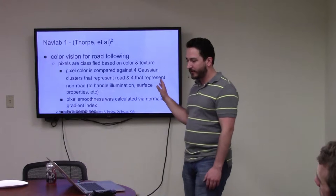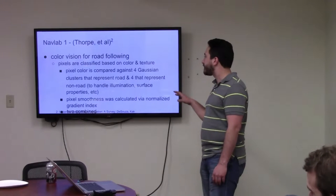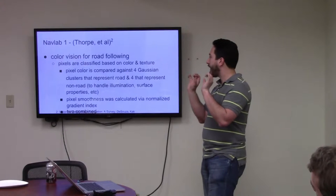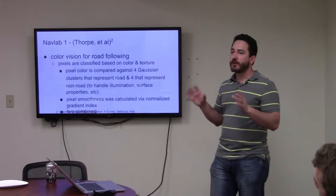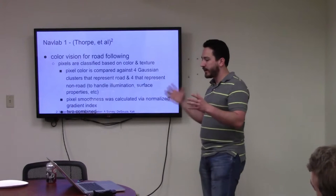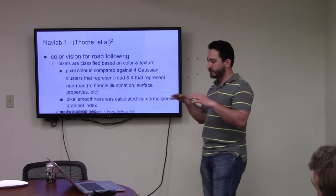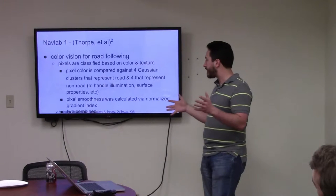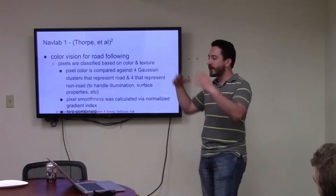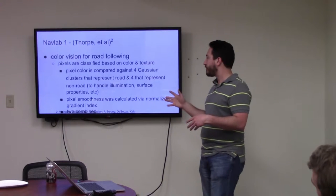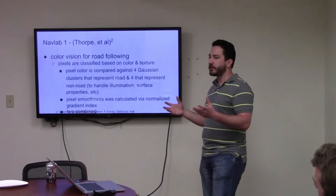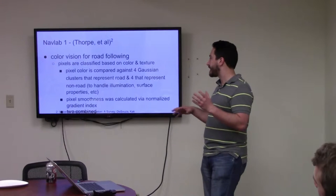To talk about this stuff a little bit, the way that NavLab 1 actually worked was it actually used two color vision cameras. And it would actually look at the color and the texture to find roads. They had four predefined Gaussian layouts that they would use that would define what a road looks like and four that were what a road didn't look like.